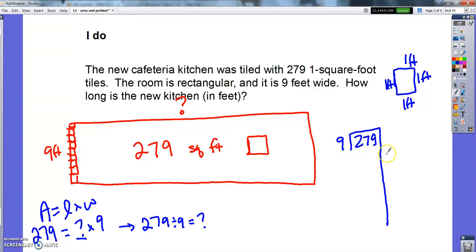279 divided by 9. So let's see. 9 times 3, I can get really close. Look, 9 times 3 is 27. So 9 times 30 is going to be 270. Leaves me with 9, and I just have to do 9 times 1. That's 9. So the room is, I made 31 sets of 9, so the room is going to be 31 feet long.